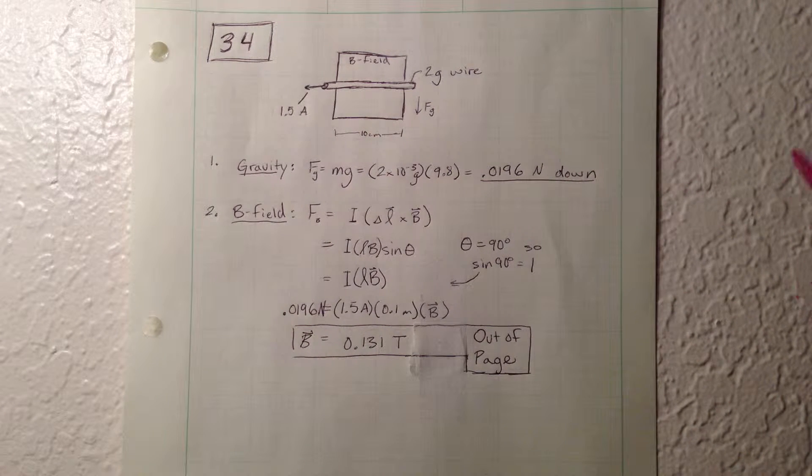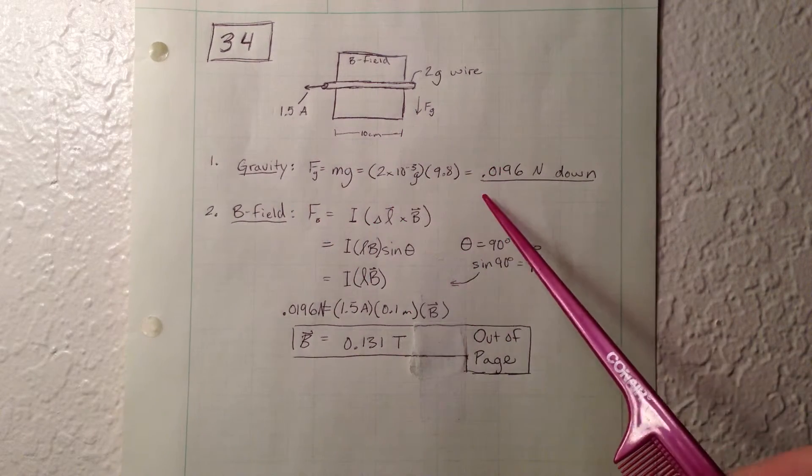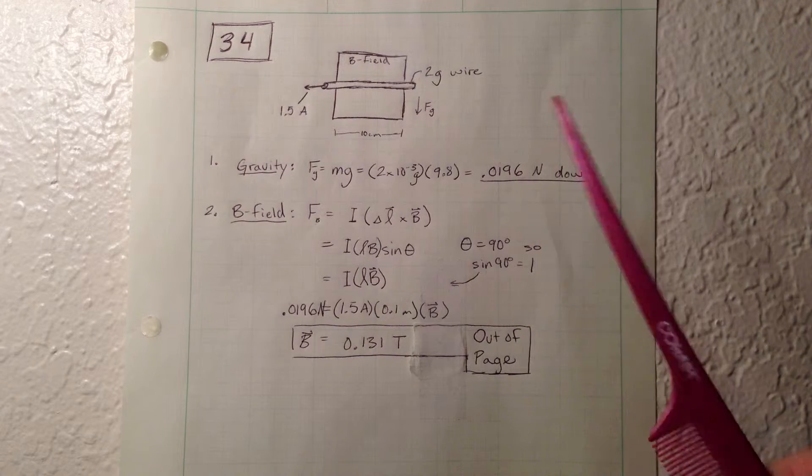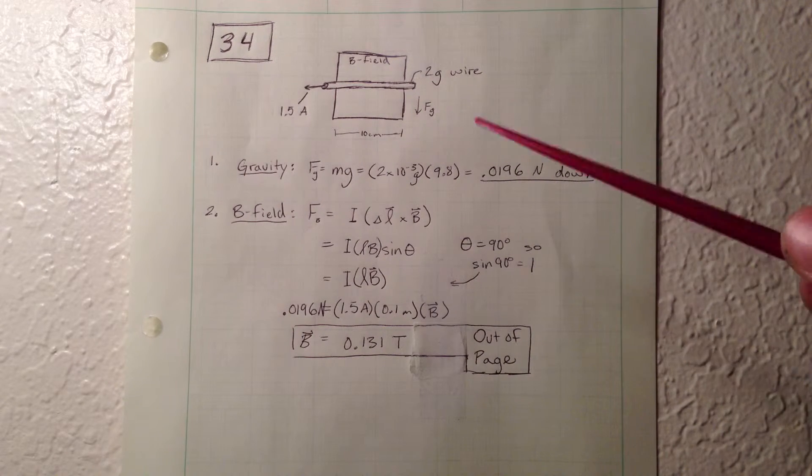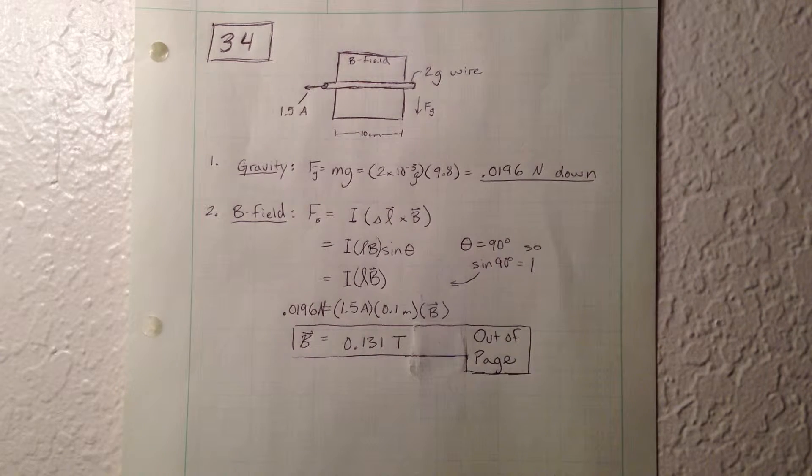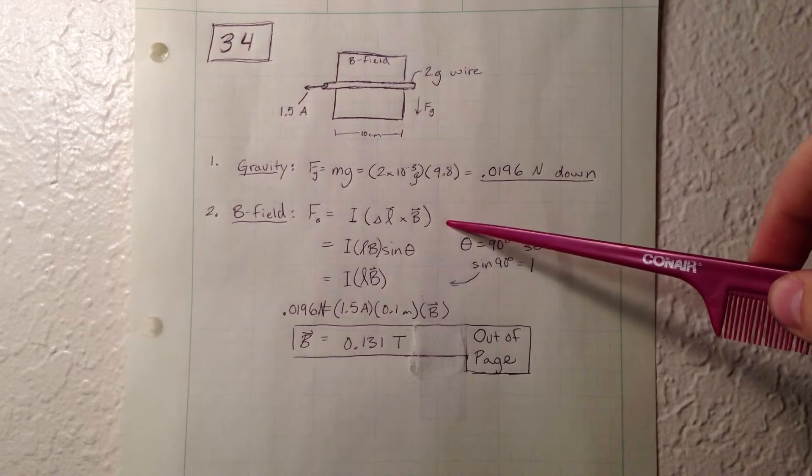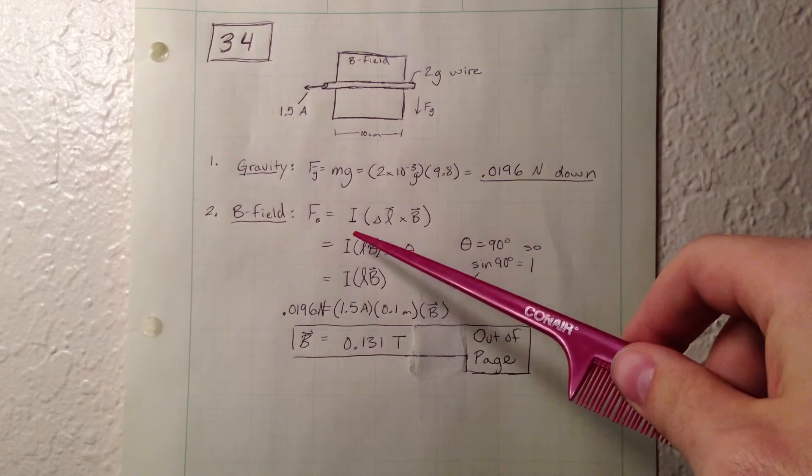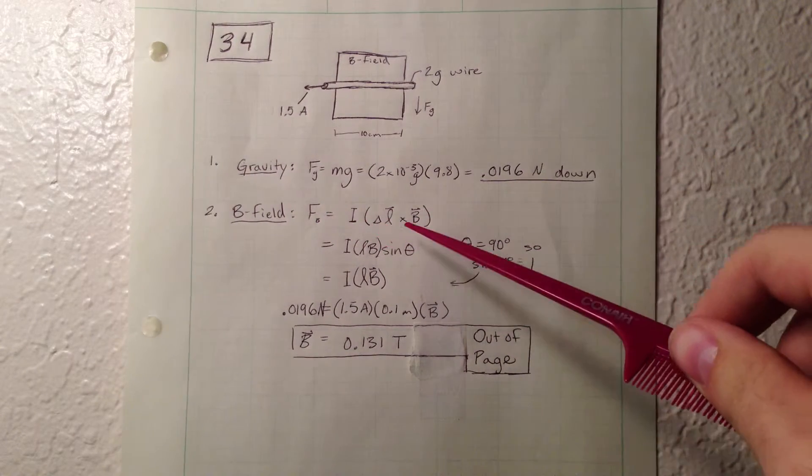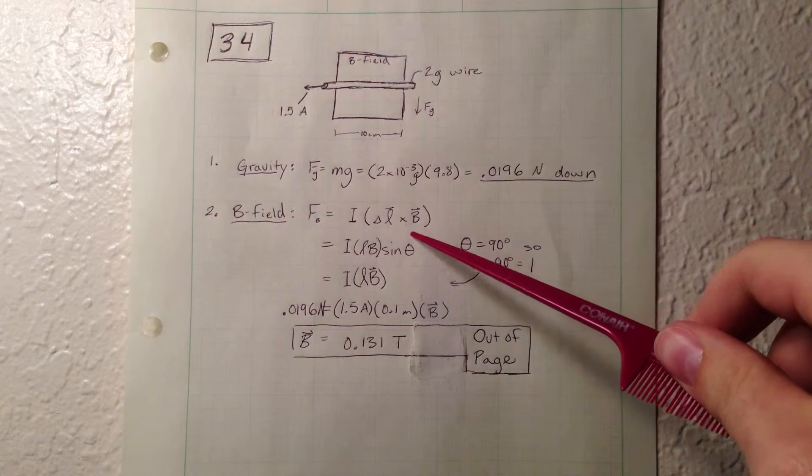So that tells us that we need a force caused by the B field to be the same magnitude as that, but in the upward direction, which would cause the wire to levitate. So we have this given equation that the force caused by the B field equals the current times the length crossed with the B field.